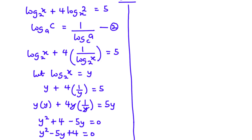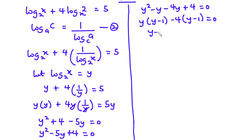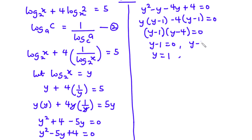The coefficient of the y squared term is 1 and the constant term is 4. We want factors of 4 that multiply to 4 and add up to negative 5 — that's negative 1 and negative 4. So we expand to y squared minus y minus 4y plus 4 equals 0. Factoring gives y(y minus 1) minus 4(y minus 1) equals 0, so (y minus 1)(y minus 4) equals 0. Therefore y equals 1 or y equals 4.